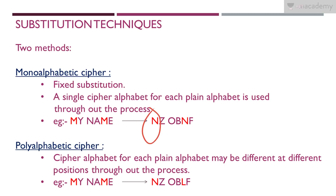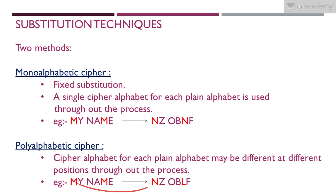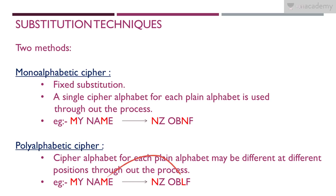The next one is poly alphabetic cipher. 'Mono' means one and 'poly' means multiple, so here we don't have fixed substitutions — we can use different substitutions for the same letter. Consider again 'my name' with two M's: for the first M I use N, for Y I use Z, for N I use O, for A I use B, for the second M I use L, and for E I use F. The first M maps to N and the second M maps to L — they differ. That is poly alphabetic cipher.